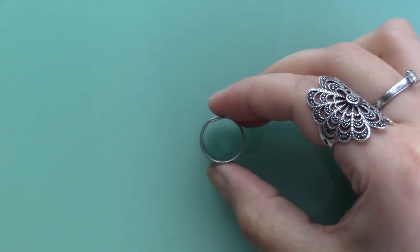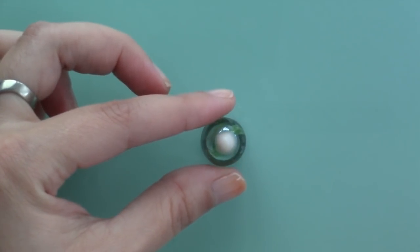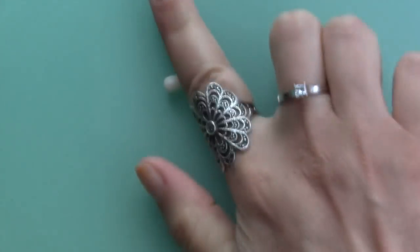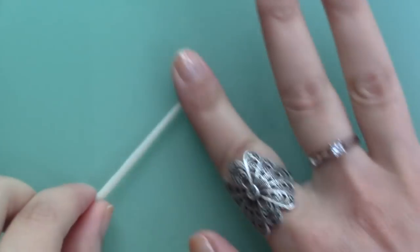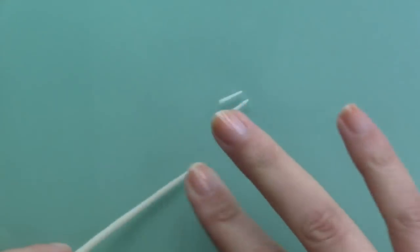Once you're done you can rest it on a cutter while you work on the tentacles. To make the tentacles you just want to roll the clay into a thin snake and cut eight pieces or more so then you can choose the best ones.